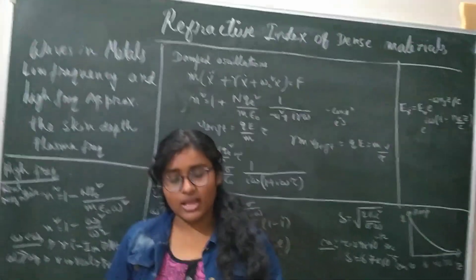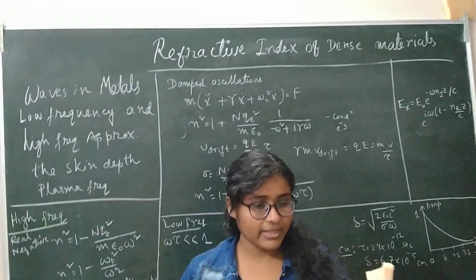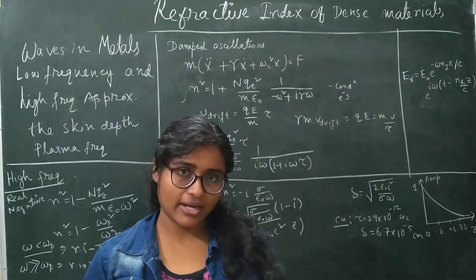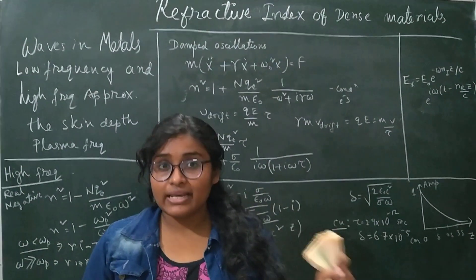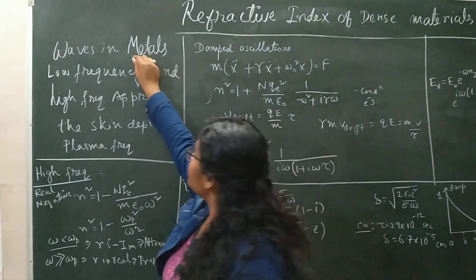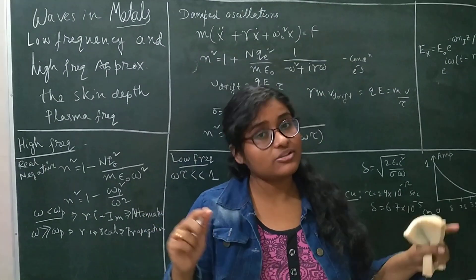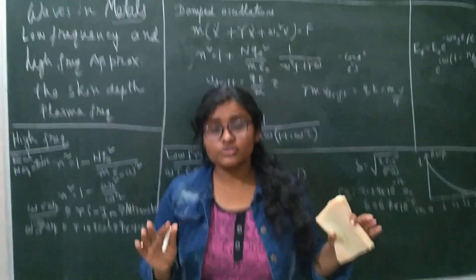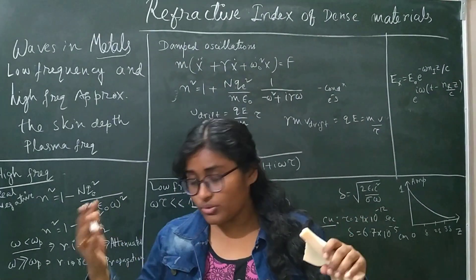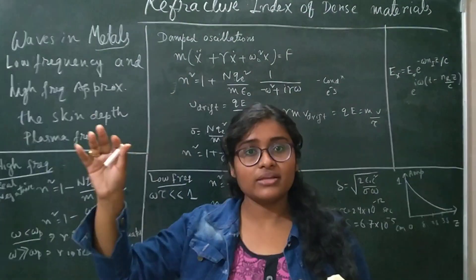In earlier videos I broadly discussed the damped vibration of electrons when an electromagnetic field is applied. Now, dielectrics consist of bound electrons. The basic difference between metals and dielectrics is that in dielectrics you have bound electrons, whereas in metals you have bound electrons as well as free electrons. However, the contribution due to free electrons is much greater than that of bound electrons.